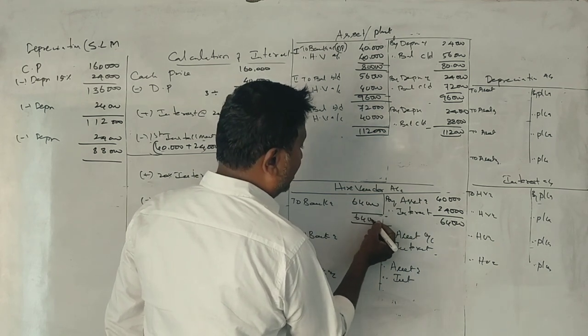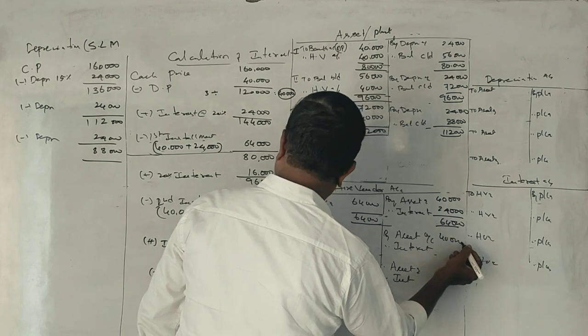Are you correct? The balance is 1,36,000, then 1,12,000, then 88,000.